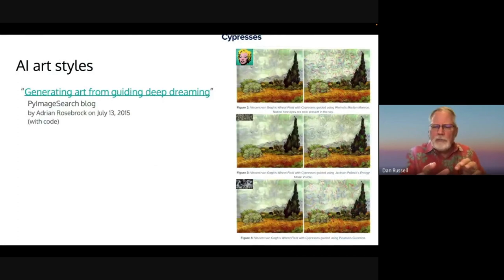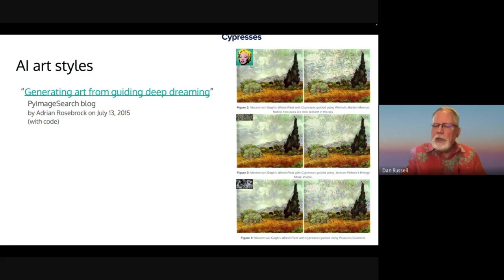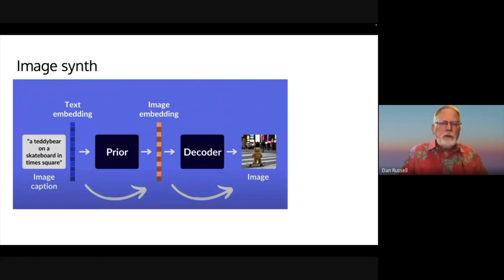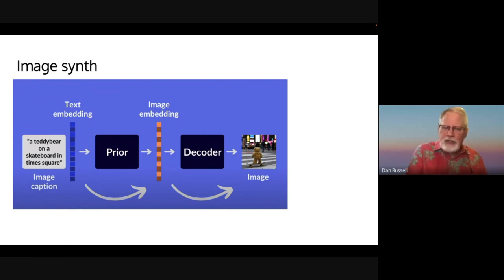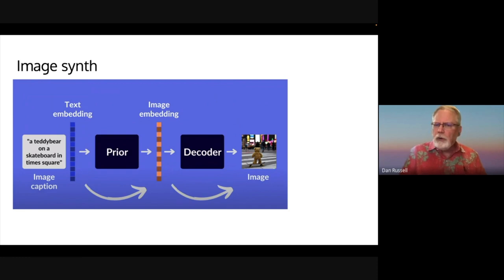We go from art styles — Van Gogh's Wheatfield with Cypress combined with different kinds of background images, like the Warhol Marilyn Monroe — going beyond just carrying style information in the model. One of the things we can start to do now is extrapolate forward and do image synthesis by taking lots of images and creating an image embedding, doing the same thing with text, and then doing this mapping from the text input — the prompt — to synthesize an image using a process like stable diffusion. This allows you to give a text prompt and create an image as described by the text.